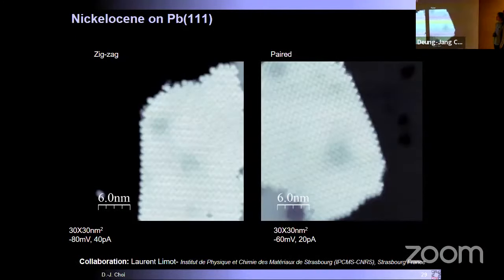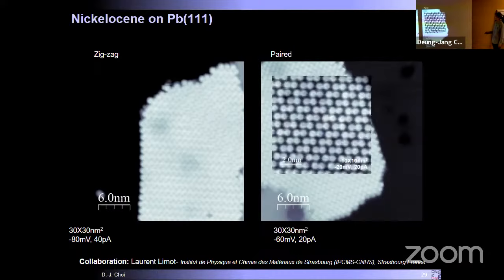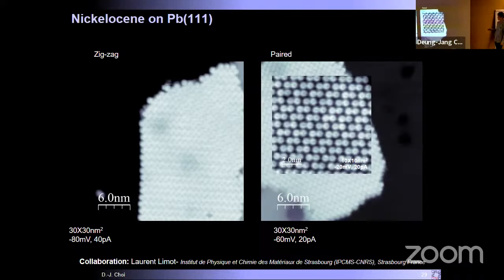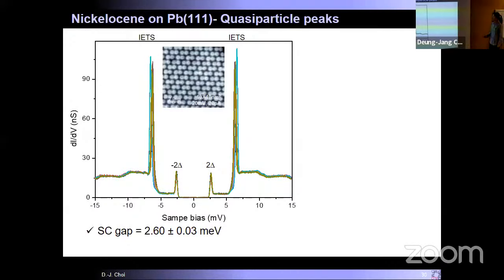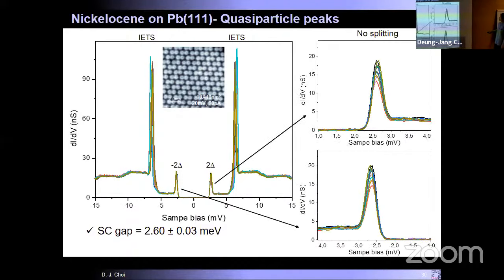We placed nickelocene molecules on the superconducting Pb(111) surface and found two different patterns: zigzag layers and nicely ordered paired layers. The paired layers consist of two nickelocene molecules binding together in dimer structures, forming an ordered layer. We study the paired nickelocene molecular layer on the Pb(111) surface. The spectroscopy shows the quasi-particle peak appearing at ±2.7 meV regardless of where we measure, consistent with using a lead-coated superconducting tip.